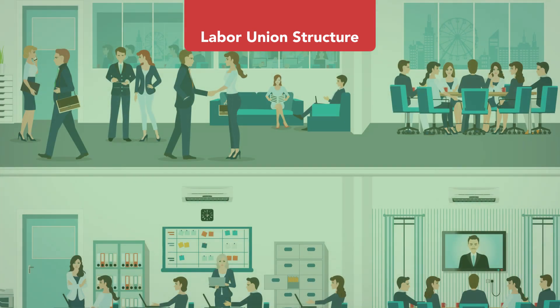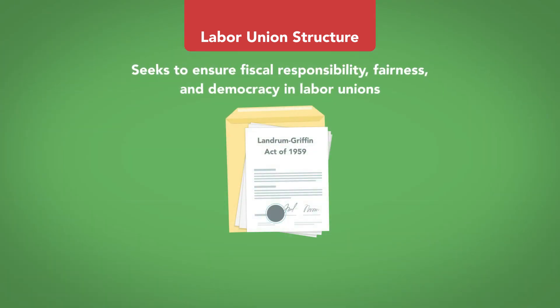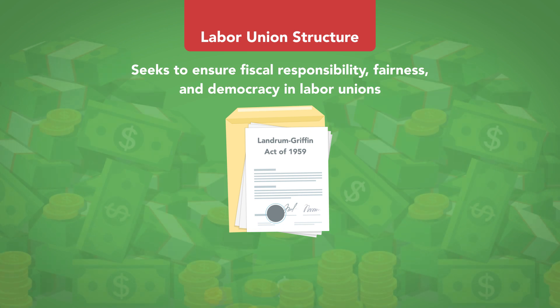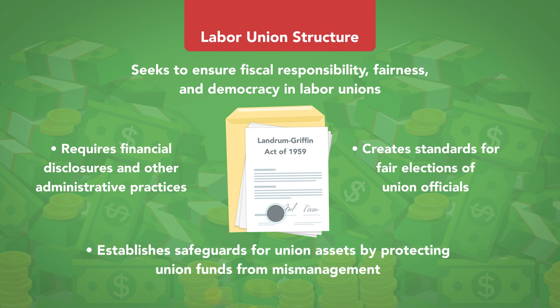Labor Union Structure. Historically, as unions grew larger, they developed more professional administrations. Labor unions now have complex administrations that manage full-time employees across the world, perform strategic planning and program evaluation, budget and invest funds, and engage in organizational practices common in large businesses. The Landrum-Griffin Act seeks to ensure fiscal responsibility, fairness, and democracy in labor unions. It requires financial disclosures and other administrative practices, creates standards for fair elections of union officials, and establishes safeguards for union assets by protecting union funds from mismanagement.